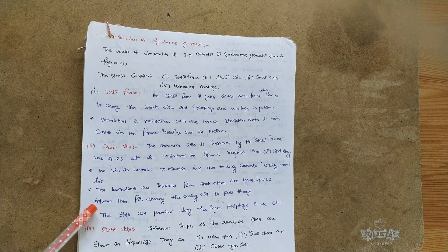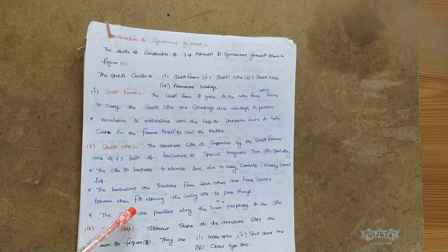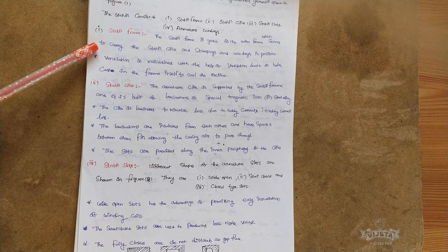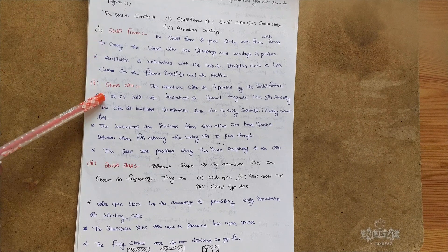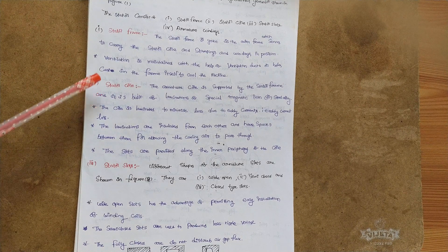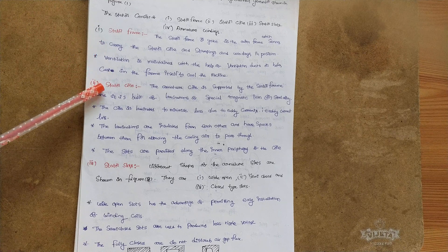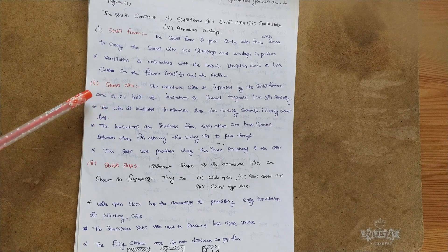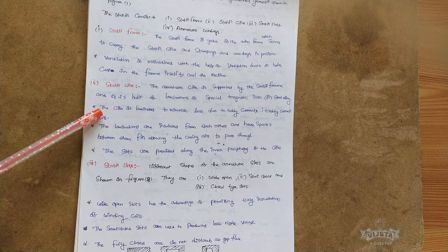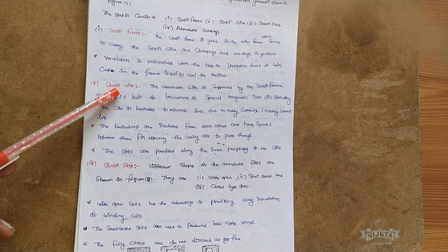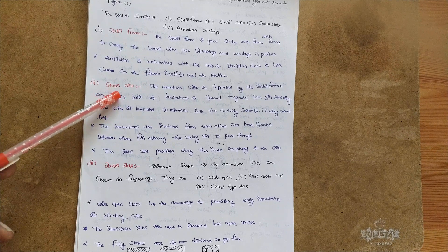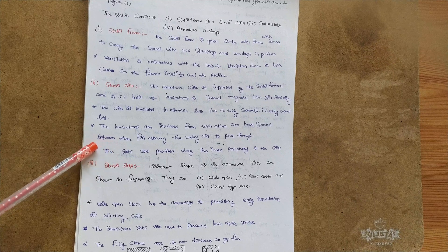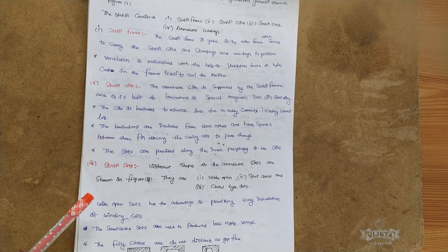The laminations are insulated from each other and have spaces between them for allowing cooling air to pass through. Slots are provided on the inner periphery of the stator core. The stator frame houses the stator core, stampings, and ventilation ducts. The stator core is made of steel alloy or magnetic iron - a magnetic material is required since the stator also carries magnetic flux. Laminations reduce eddy current losses and allow cooling air flow.